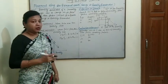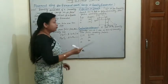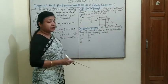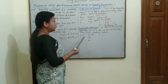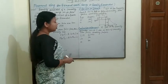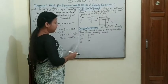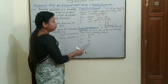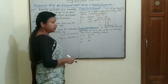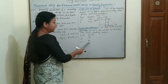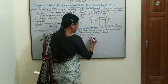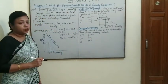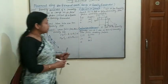Contraction of demand means a falling quantity demanded due to a rise in price of a commodity, with other factors remaining constant. For example, if the price in the market is 20 rupees and we demand 100 units, but now the price increases, we demand fewer units — demand falls from 100 to 70 units. That is known as contraction of demand.